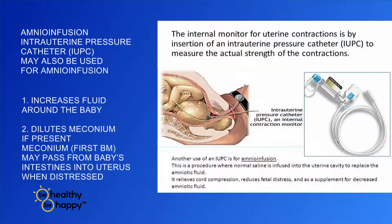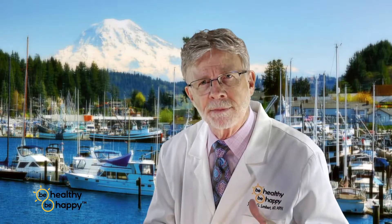One of the other things we often do is amnioinfusion — infusing fluid, normal saline, into the uterus to expand it and give the infant more room. If there's low amniotic fluid putting pressure on the baby, we'll do an amnioinfusion to correct decelerations and other abnormalities. And remember with all of this, it's about early intervention. We don't wait until we've got prolonged, late decelerations. We try to intervene early, and often that works really, really nicely.